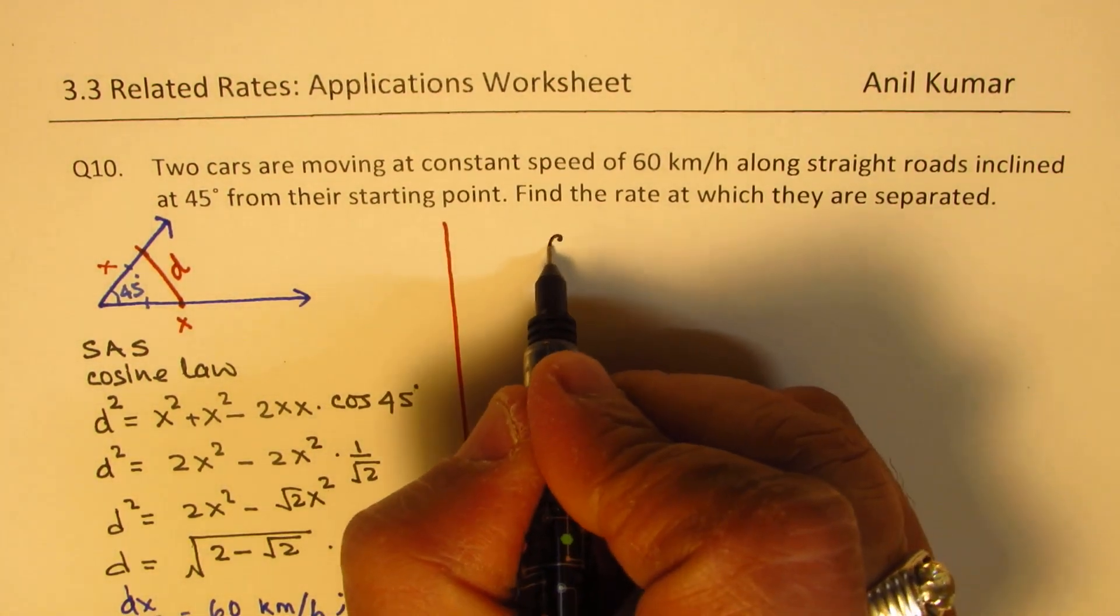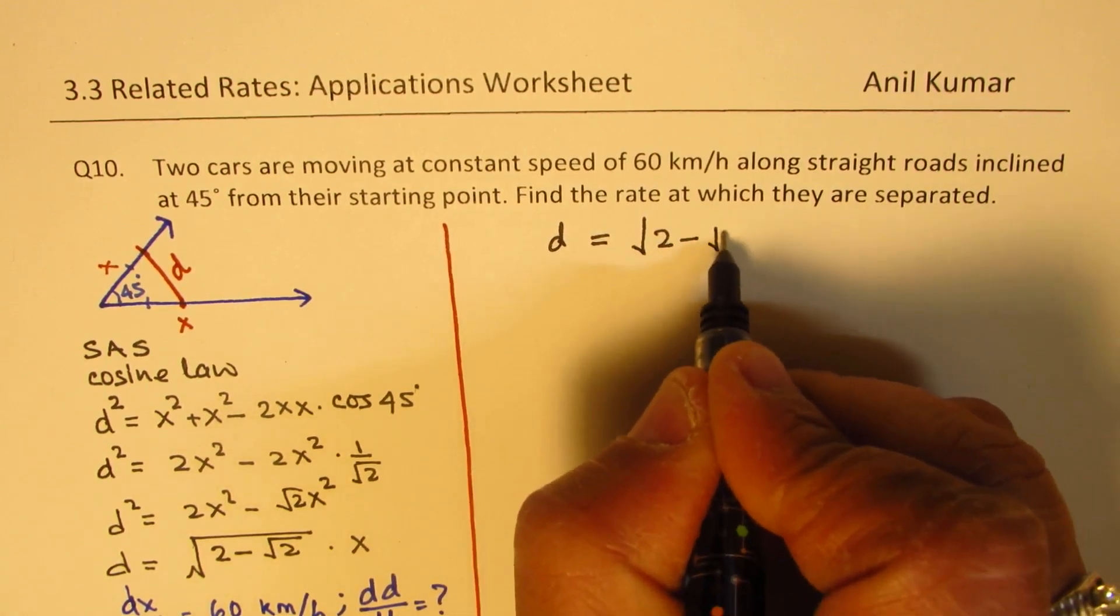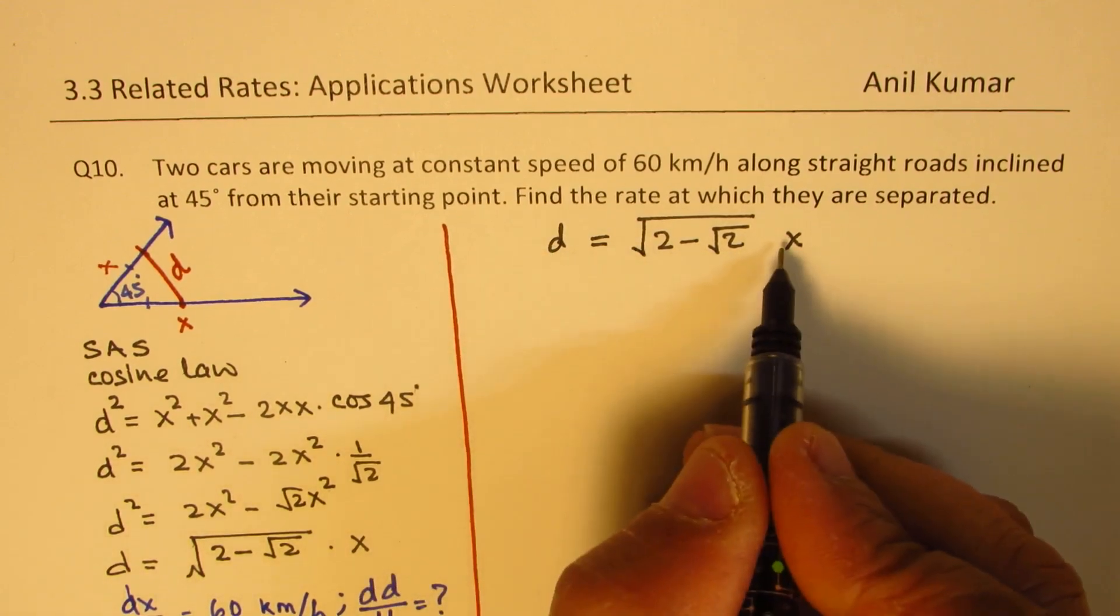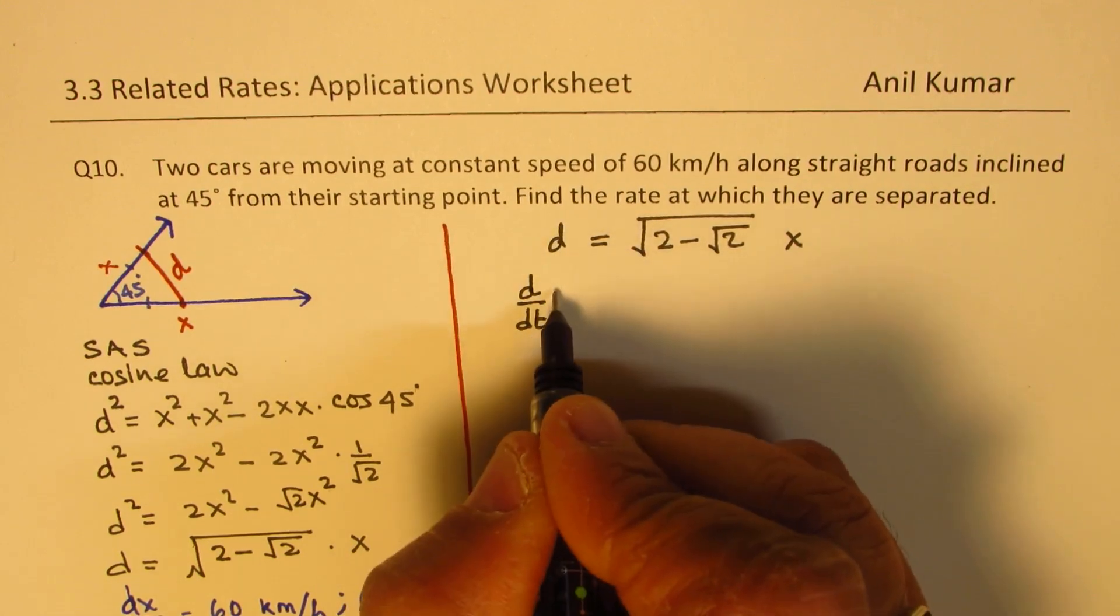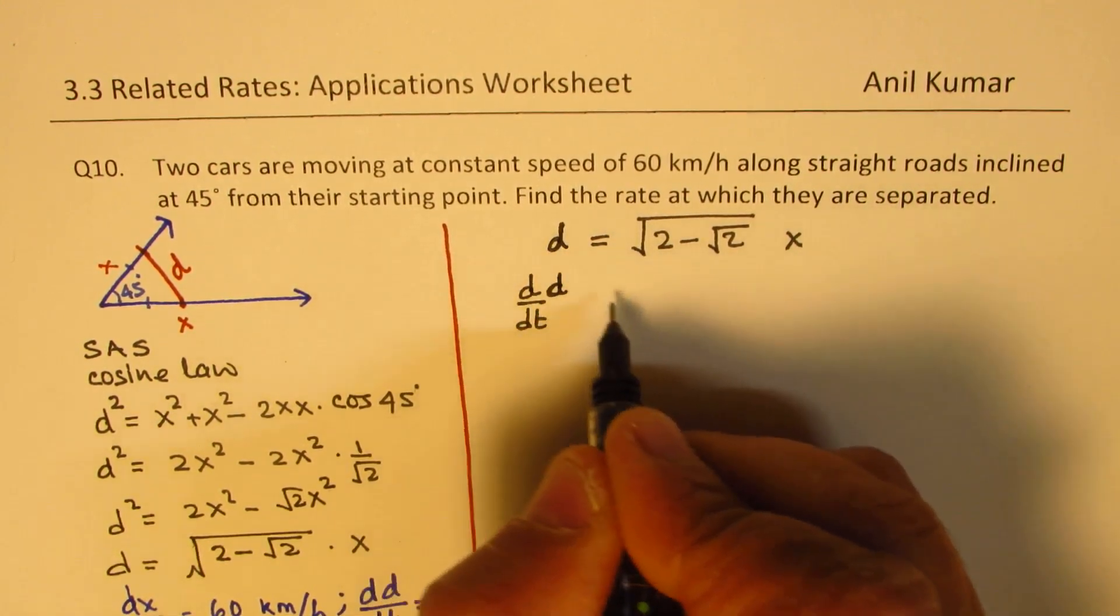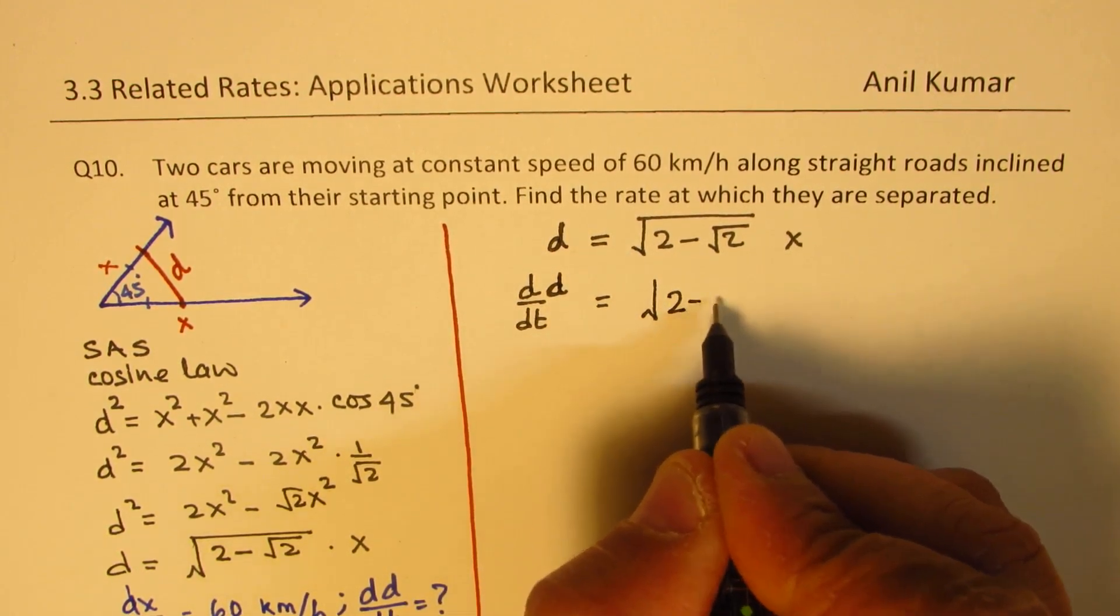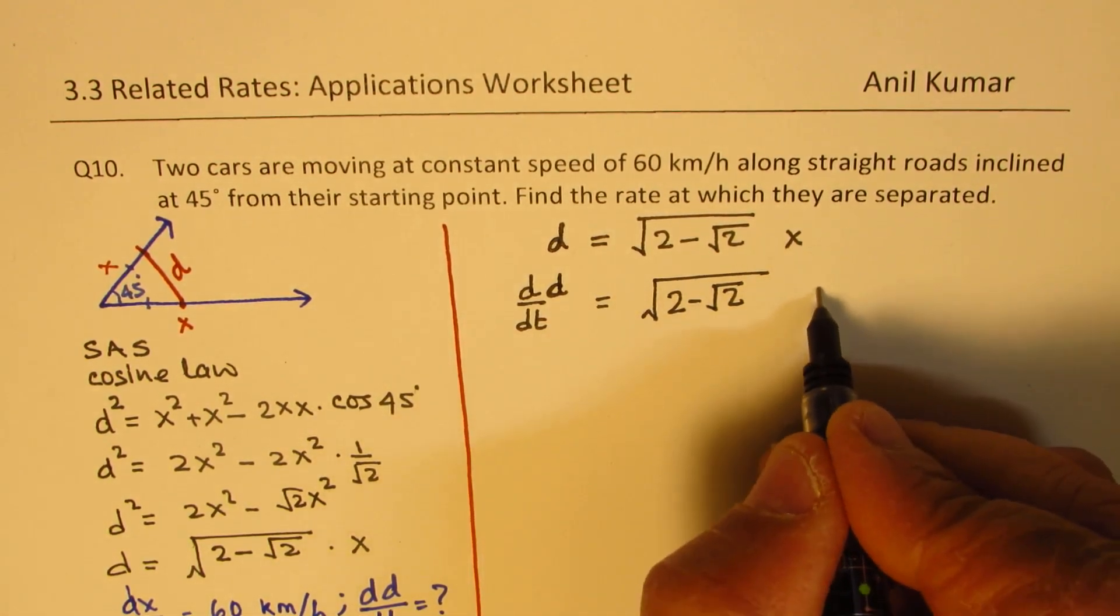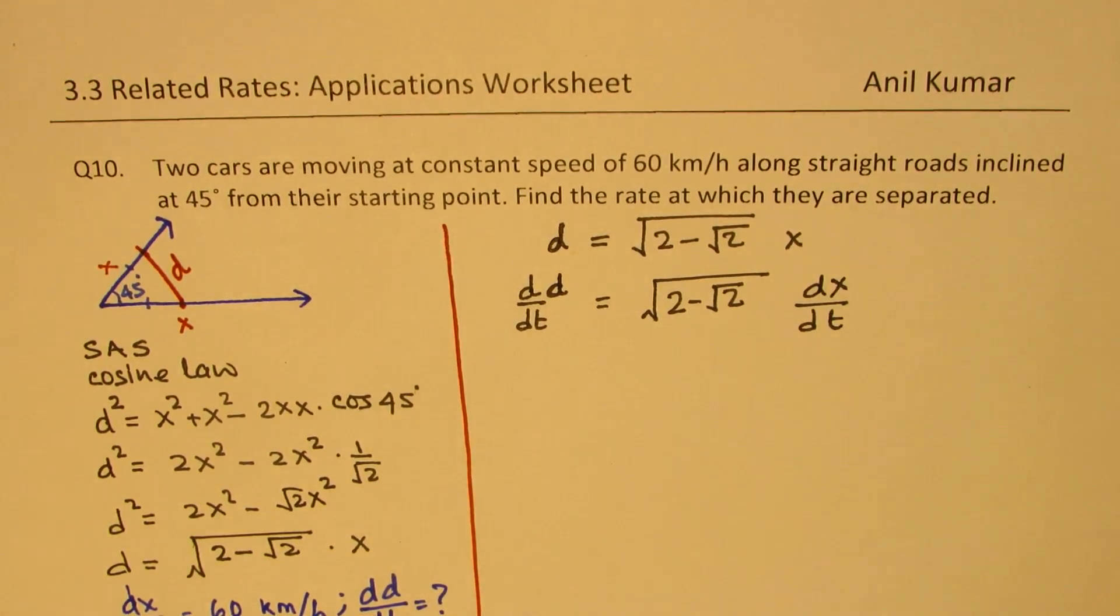So now we know the relation. So let's find derivatives. So d is equal to two minus square root of two times x. So if I differentiate with respect to two times, so d dx, d dt of this d, of this d, which is separation, is equal to, that is a constant, so we'll have this constant very much there. And this will be dx dt. So we get our relation.